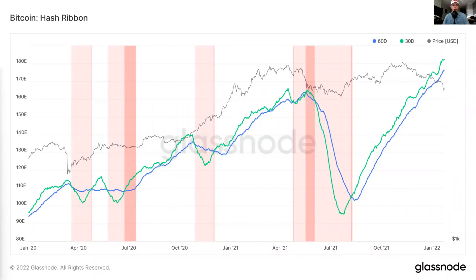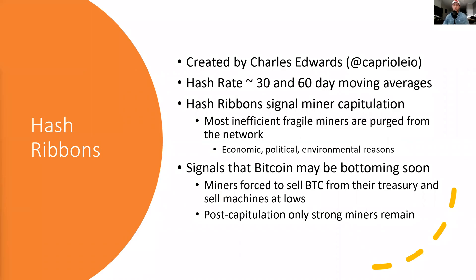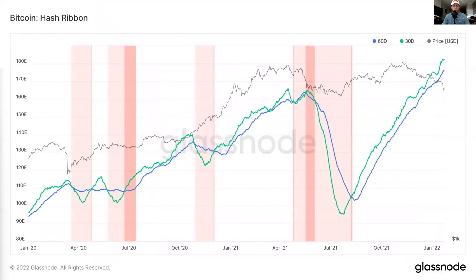So this is what the hash ribbon chart looks like. Basically, hash ribbons is a metric created by Charles Edwards of Capriole Investments. You can see his Twitter right there, CapriolIO — go follow him, he has a lot of great Bitcoin and crypto-related content. The metric comes down to Bitcoin's network hash rate, and it creates two unique deviations: one is a 30-day moving average of Bitcoin's hash rate, and the other is a 60-day moving average of Bitcoin's hash rate.